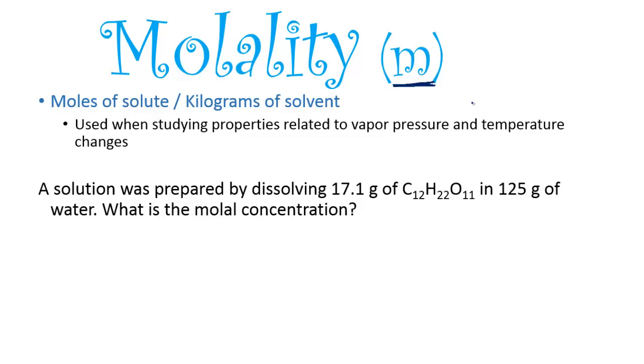So a solution was prepared by dissolving 17.1 grams of C12H22O11 and 125 grams of water. So what is the molal concentration? Now the hardest part about these problems is maybe determining which one is the solute and which one is the solvent. Because you can see they're both in grams. But one of them we're going to have to change to kilograms, and the other one we're going to have to change to moles. So you've got to kind of read through the question, figure out what is dissolving into what. The solute is the one that's getting dissolved into the solvent. So in this case, this is going to be our solute that is going to be dissolved into our solvent.